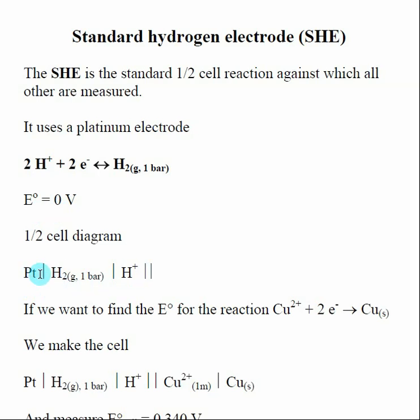We typically set it up as the anode half-reaction, so the platinum electrode is the anode. It's in contact with hydrogen gas and H+. Then we take whatever other half-reaction we're interested in and make it the cathode. In this case, say we want to measure E° for the reaction Cu²⁺ + 2e⁻ → Cu(s).